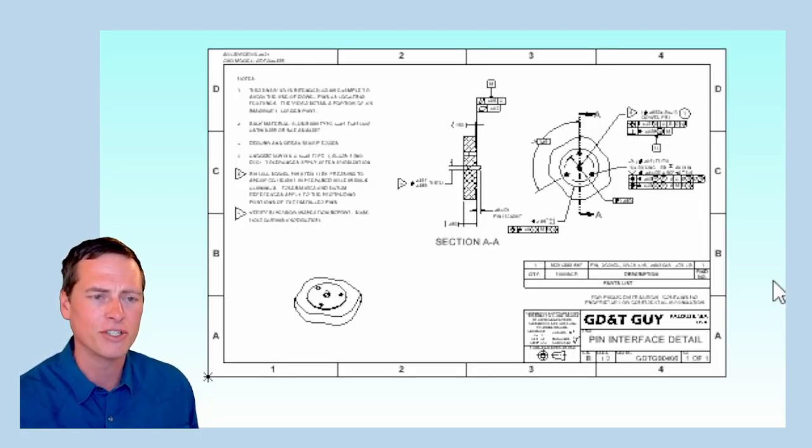And then here's the drawing, which is GDTG00406. The callouts I want to show you on this drawing do two things. One, they position the location of this interface within the larger part. And two, they define and control the interface. Let me show you what I mean.